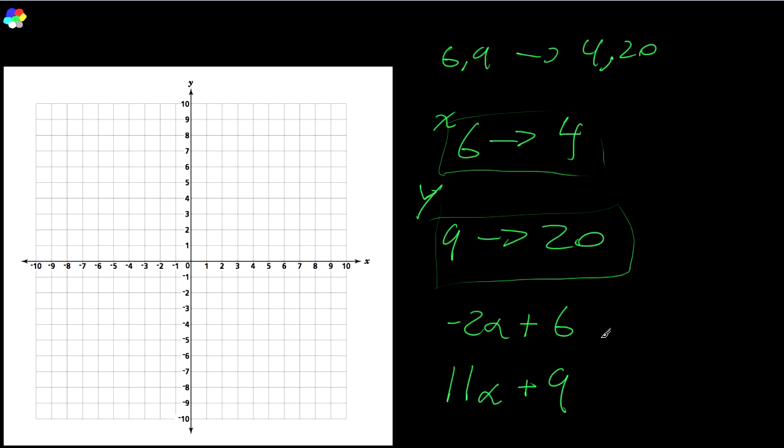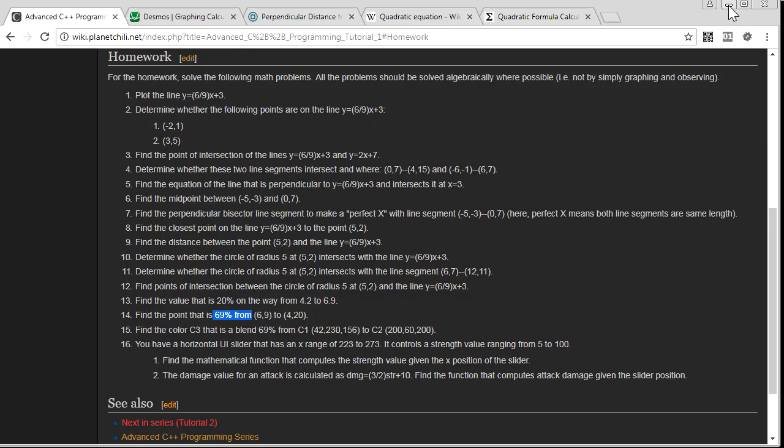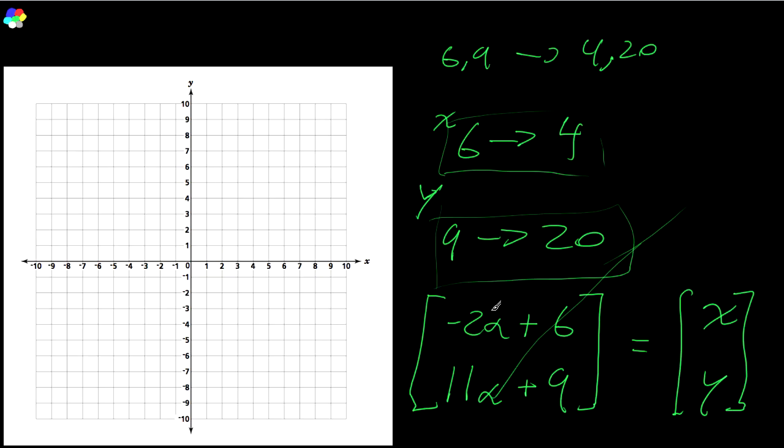So this gives you your equation for x and y. And then any alpha that you plug in, you apply it equally to both of these. So we want to go for, what is it? 69% I believe it was, right? Yeah, 69%. All right. So to do that, you're just going to plug in 0.69 into both of these alphas, and when you calculate that out, you get 4.62, 16.59. So this is the point that is 69% of the way from 6.9 to 4.20. Beautiful.